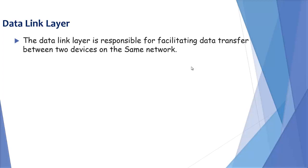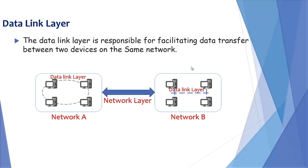Network layer is responsible for data transfer between two devices on different networks, while data link layer is responsible for facilitating data transfer between two devices on the same network.